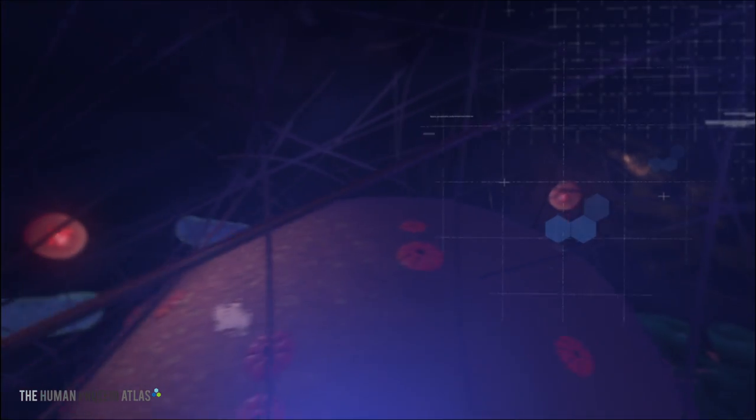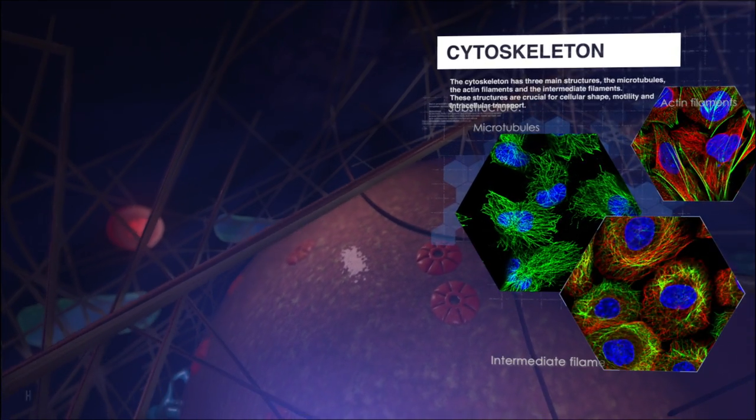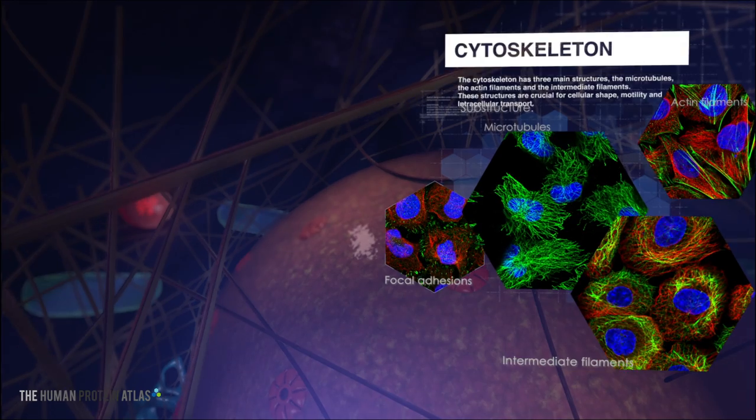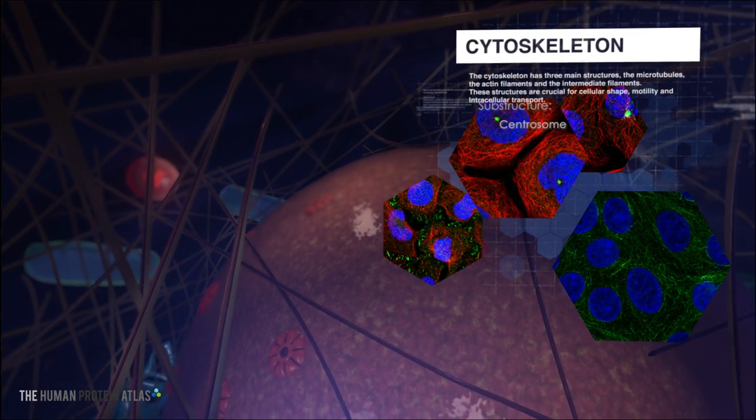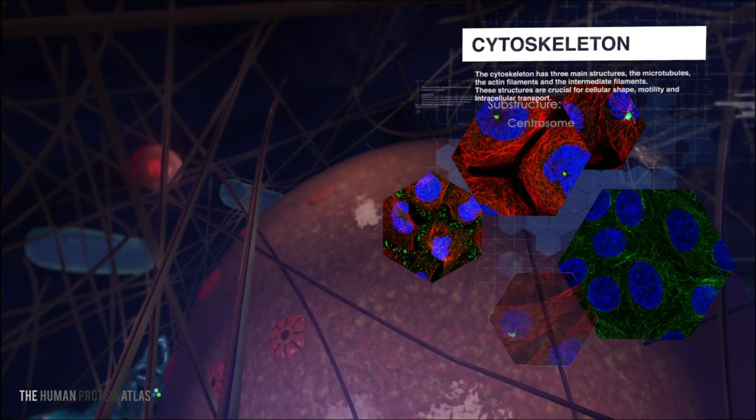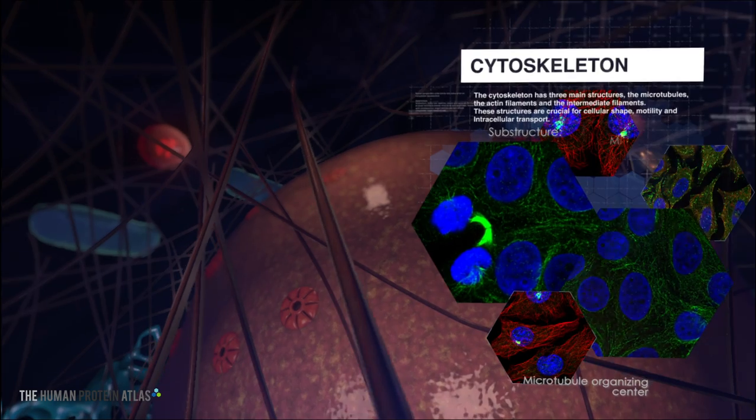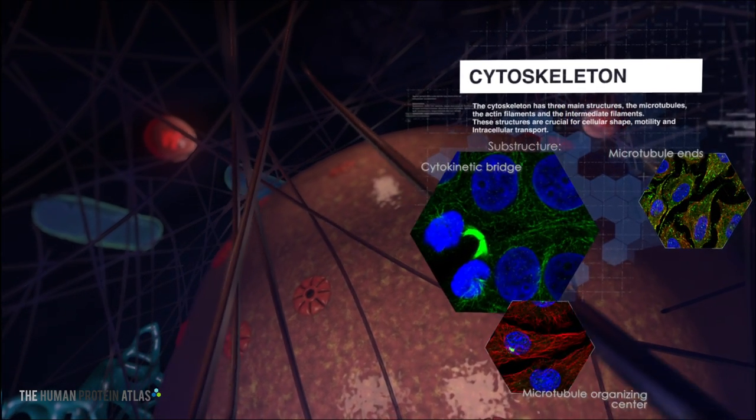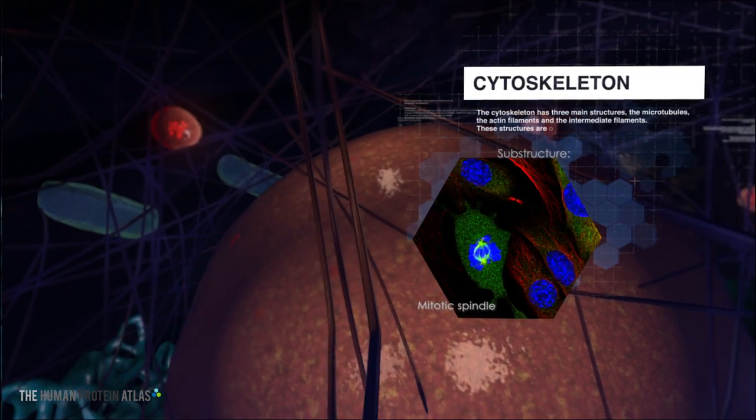There are three types of cytoskeletons in the cell: microtubules, actin filaments and intermediate filaments. These structures are crucial for maintaining cellular structure and architecture. In addition to providing stability to the cell, the cytoskeletons also act as a transport network for organelles, control motility and cell division and form the mitotic spindle.